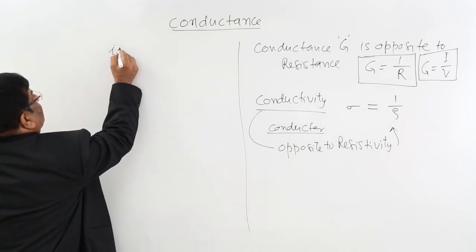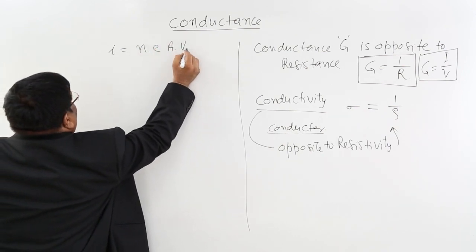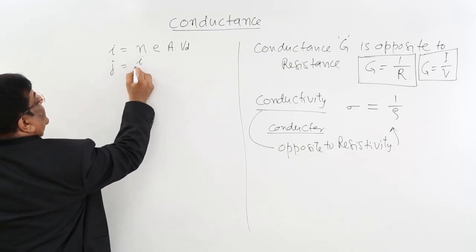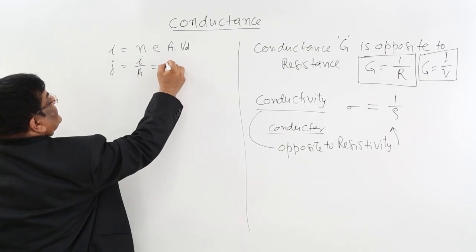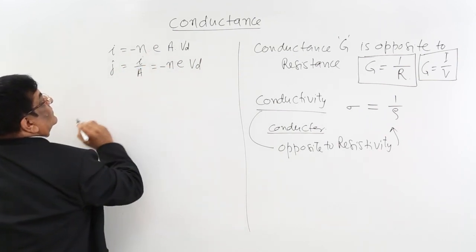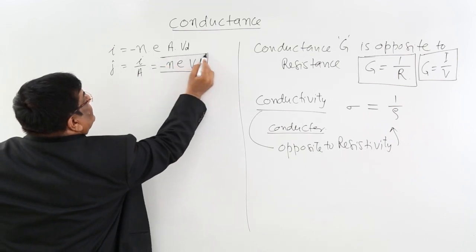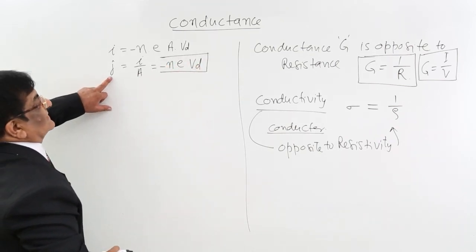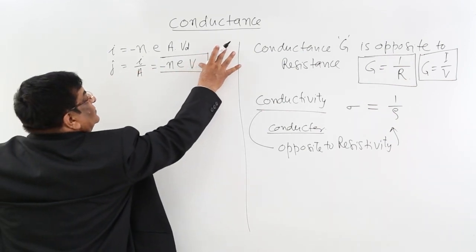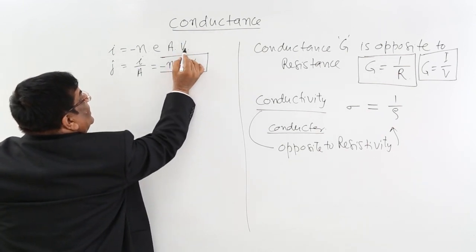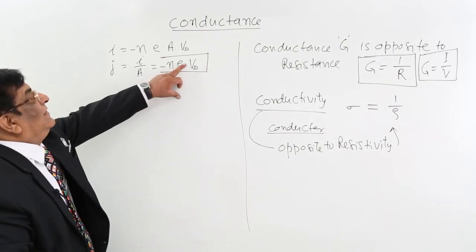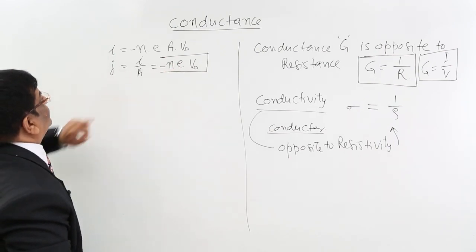Current I is equal to nEAv_d. So J is equal to I upon A, which gives J equal to nEv_d. This is the electric current density J. Note that v_d here is drift velocity, so N E v_d represents the drift velocity term.